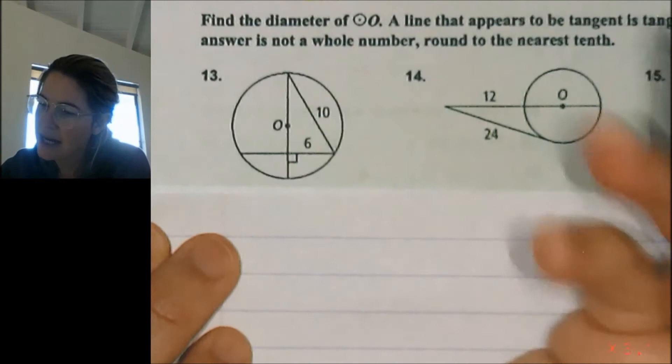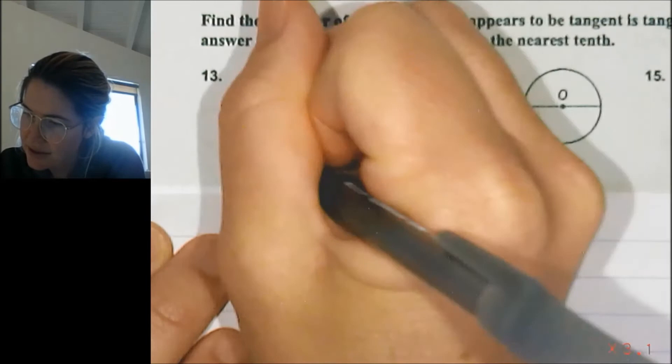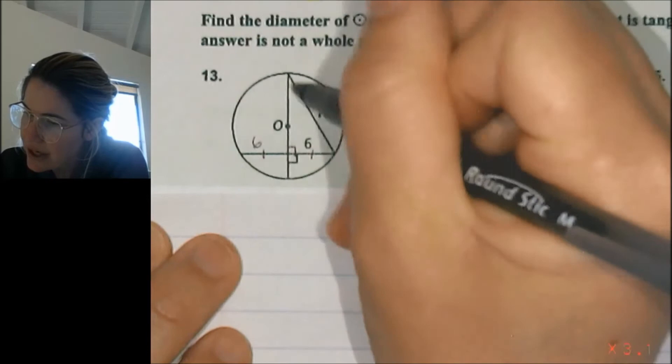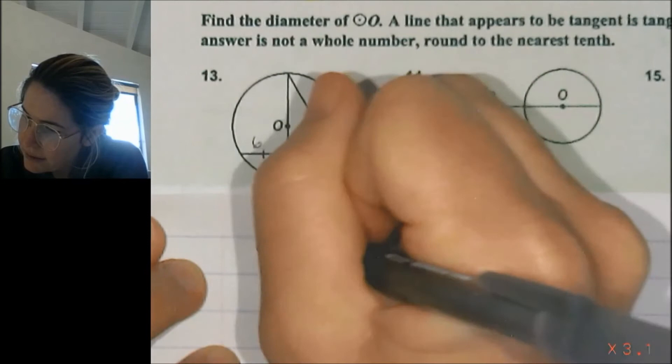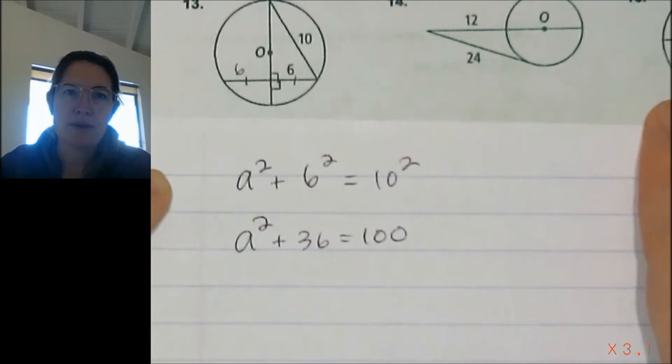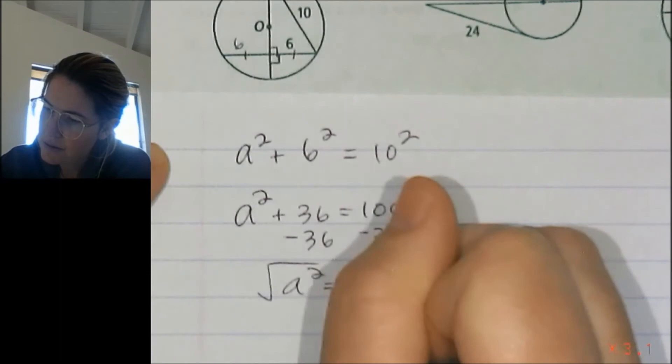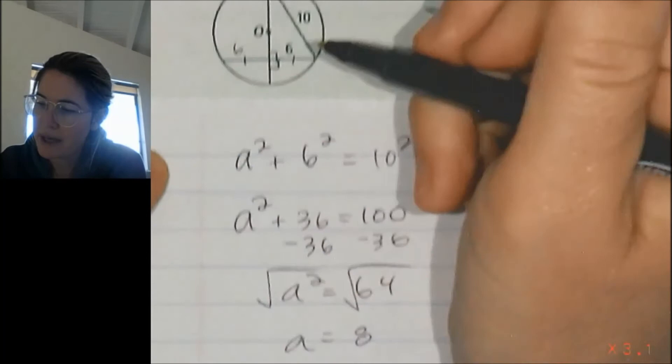Okay, number 13, yet again kind of putting a lot of things together. So the first thing I notice is I have a right triangle here. They're asking us to find the whole diameter. If that is a right angle, I know that that's going to be congruent to that. So this guy is 6. And then I also notice I have a little right triangle here. So I can use Pythagorean theorem to do a squared plus b squared is equal to c squared. All right, we're just going to, so I've multiplied this out for you. And then we're going to subtract 36 from both sides. And a squared is equal to 64. Square root, and a is equal to 8.